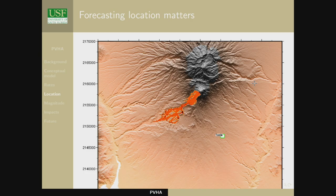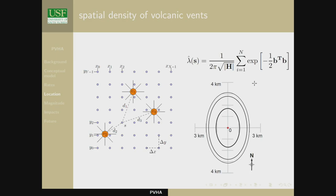Forecasting location matters, as was mentioned frequently yesterday. Here's an example from Colima again: if I simply move the vent a few hundred meters for lava flow simulation, the hazard on the flanks changes tremendously. That puts a lot of onus on understanding where events are going to form. One way to look at probability of vent formation using the rock record is to look at where events have occurred in the past. We use something called the kernel density function — basically we want to estimate the probability of a vent forming at location S. It depends on a bandwidth matrix H that controls the shape and rotation of the kernel, which might respond to tectonic activity or prevalent dyke orientations.